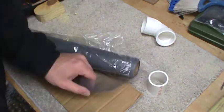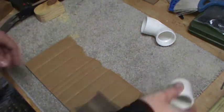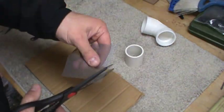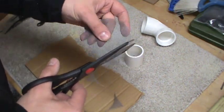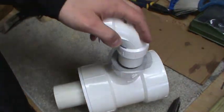The small filter that I'm cutting out of a piece of window screen is going to go between the diverter and this 90-degree fitting. That should filter out any large dirt or debris that comes off the roof.